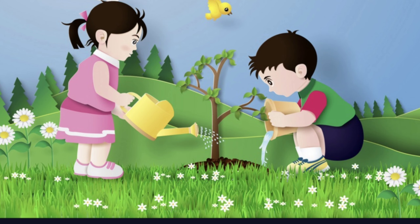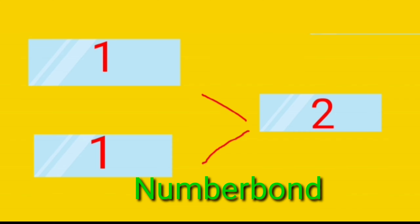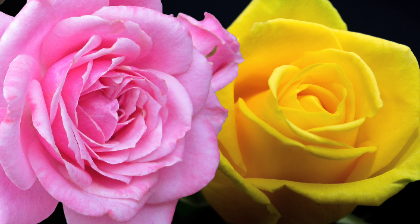Two! Yes, you got it right! This is a number bond in two — there are two ones: one plus one equals two. Look at these flowers, so pretty right? Now tell me, using the number bond that you've learned, how many flowers do you see?